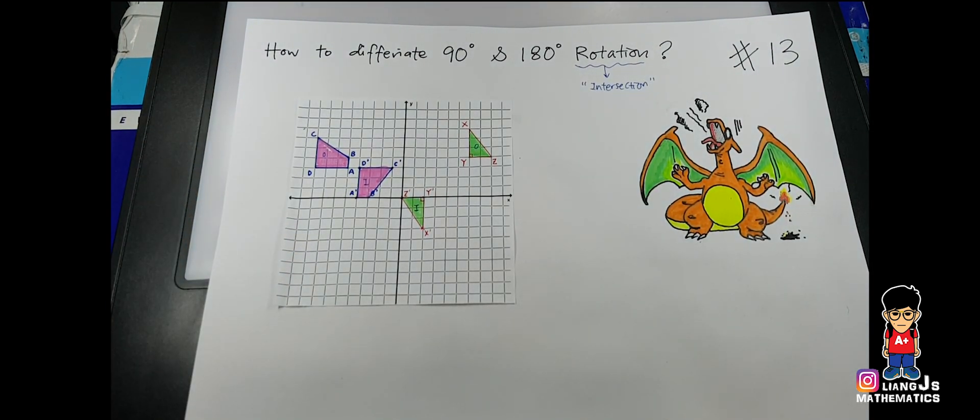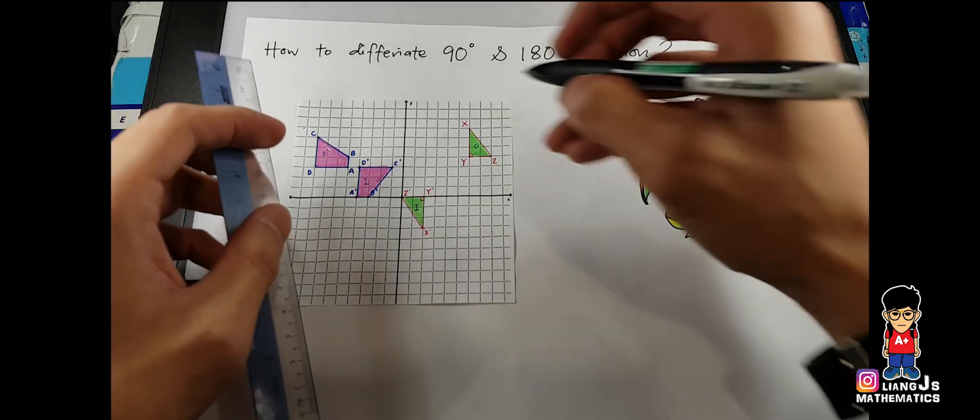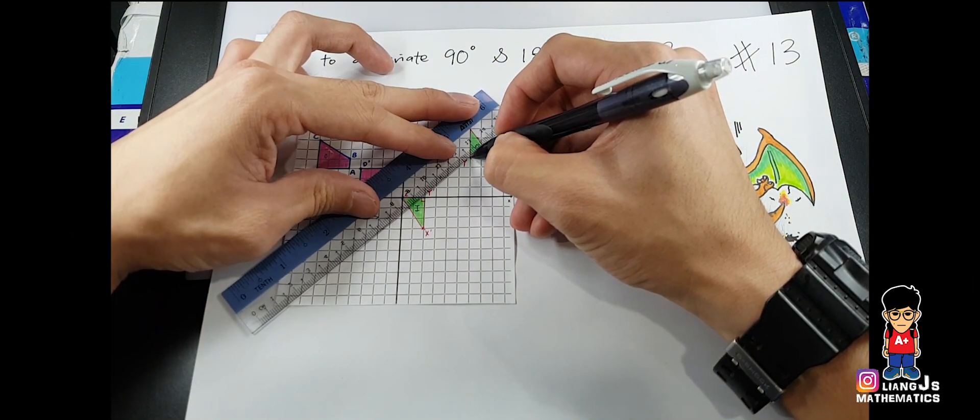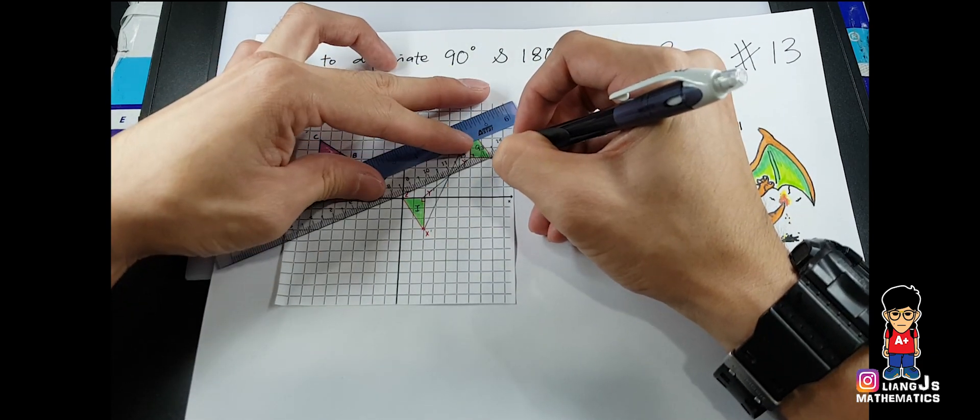So the first thing I do is I will take my pencil and ruler and I will connect all the relevant points together. Look at this case. Y to Y. And after that, you have X to X. And the other one, you have your Z to Z.